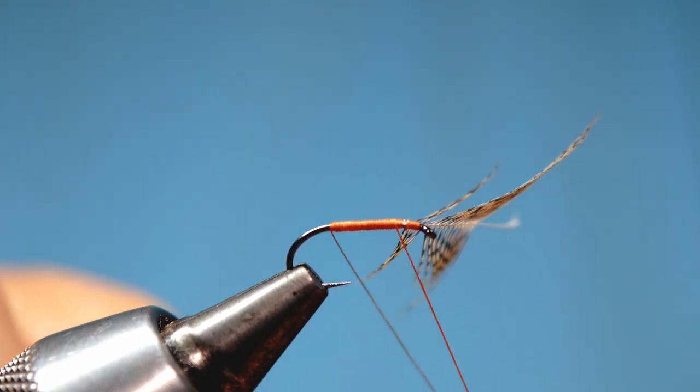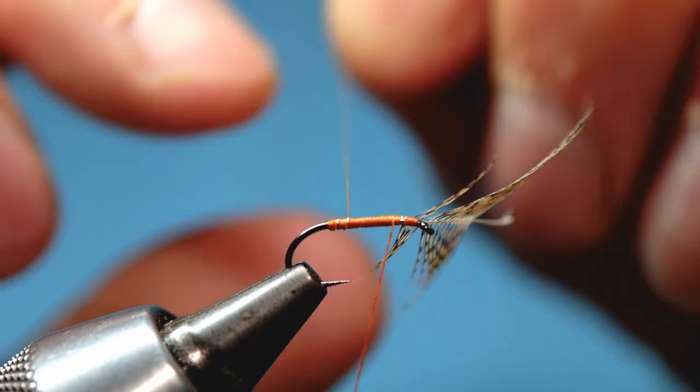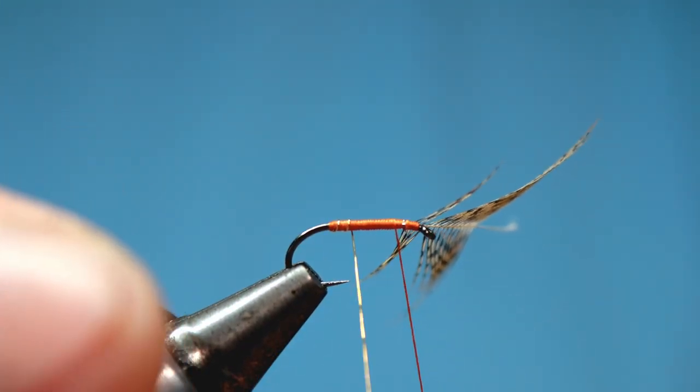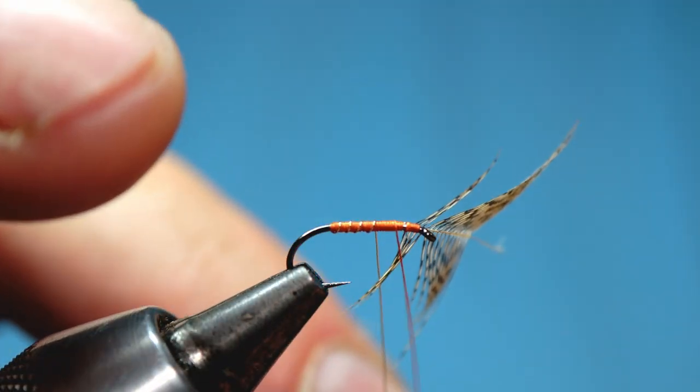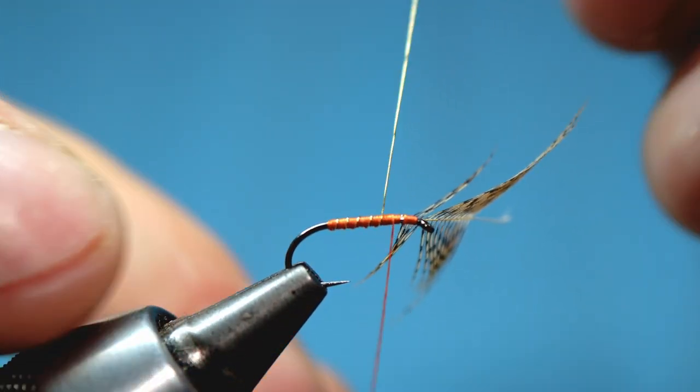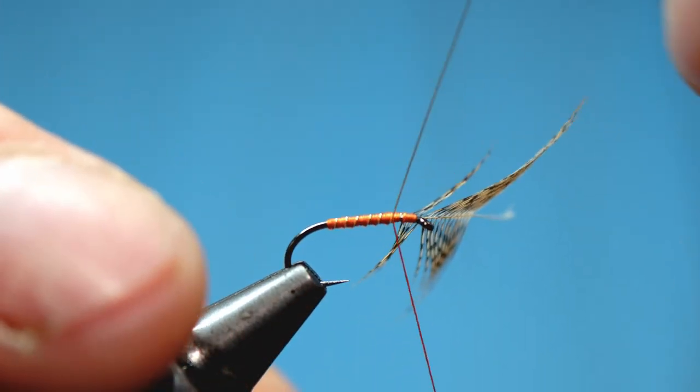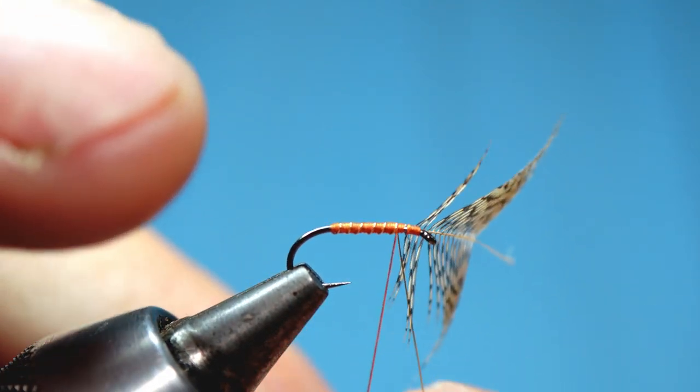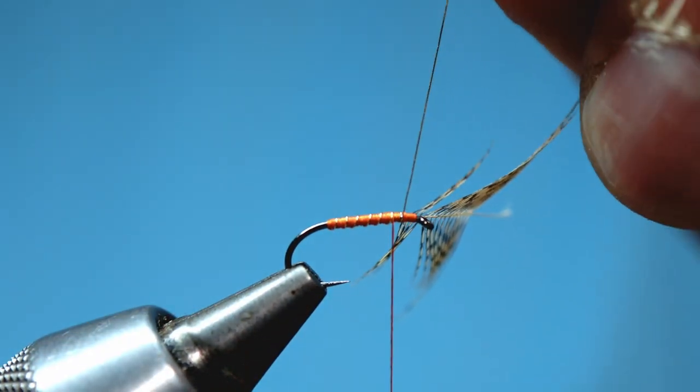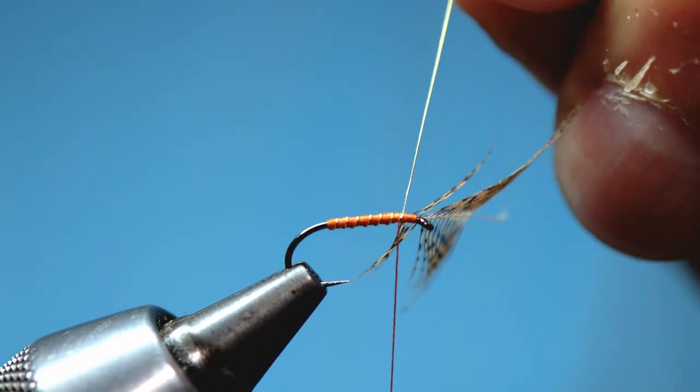And now we rib the fly with nice open symmetrical turns of wire, then bind down that rib with two nice firm turns of silk.